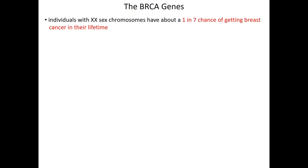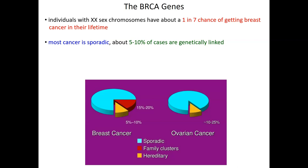We'll start with BRCA genes. Individuals with two X sex chromosomes have a 1-in-7 chance — greater than 10% — of getting breast cancer in their lifetime, simply by being biologically female. Most of this cancer is sporadic, meaning it arrives without a genetic basis. But 5 to 10% of cases are genetically linked. About 70 to 80% of breast cancers are spontaneously arising, most likely due to environmental or induced mutations, while another 10 to 20% is genetic — either hereditary or observed in family clusters.